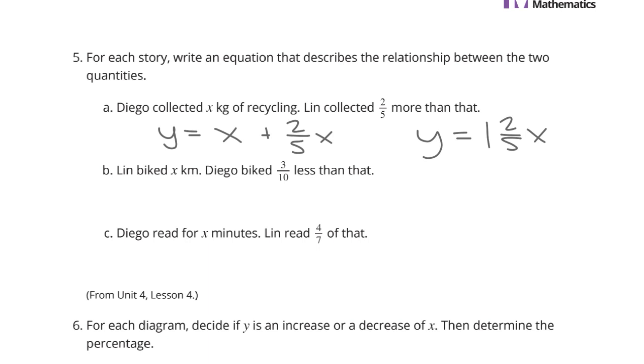Lynn biked x kilometers. Diego biked 3/10 less than that. We can start off by saying y equals x minus 3/10 of x. Simplify that, y equals 7/10 x.